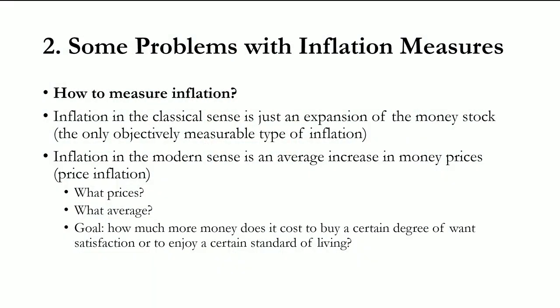Price inflation immediately raises the question of what prices we should look at — all or just a selection — and what average we should calculate and how we should weight these prices. The ultimate goal of a price index is to assess how much more money one needs to obtain a given level of satisfaction or standard of living. You can see that this problem is ultimately unsolvable — it's again about welfare and utility, something that is not measurable. So we have to come up with some best approximation.